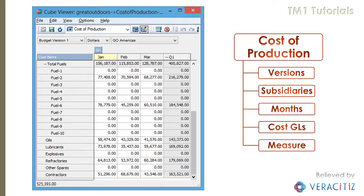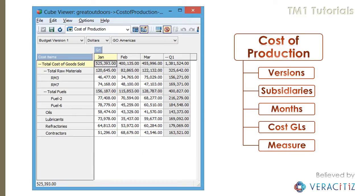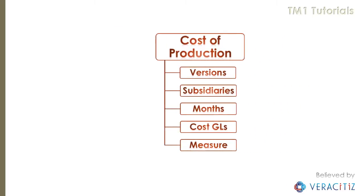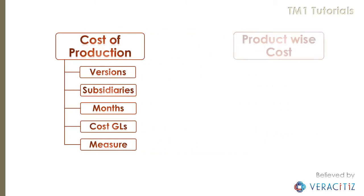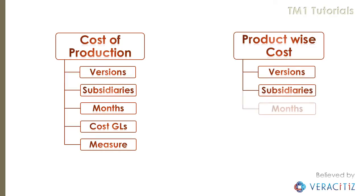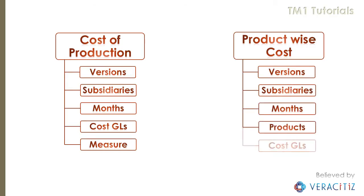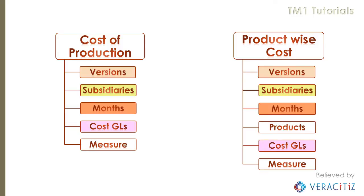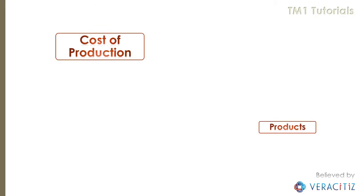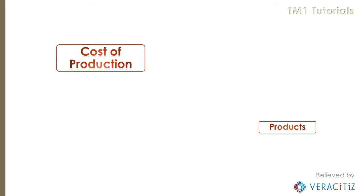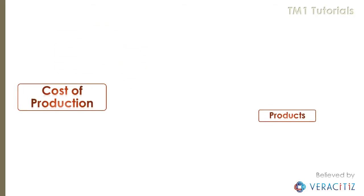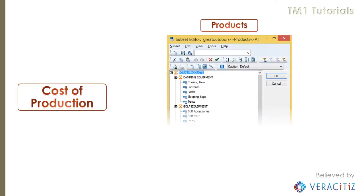After suppressing zeros, you can find only 20% of cost GLs have values. Now the company is manufacturing multiple products. The common cost needs to be allocated product-wise. In the product-wise cost cube, all other dimensions remain the same except the products dimension, which means the cost of production has to be allocated to products based on production.